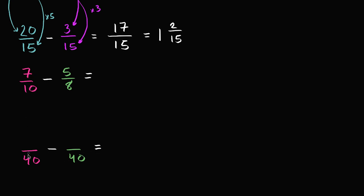7/10 is what over 40? To go from 10 to 40 in the denominator, we multiply by 4, so we multiply the numerator by 4 as well. 7 times 4 is 28, so 7/10 is the same thing as 28/40. For 5/8: to go from 8 to 40, we multiply the denominator by 5, so we multiply the numerator by 5 as well. 5 times 5 is 25.